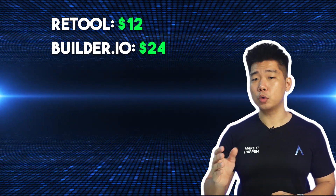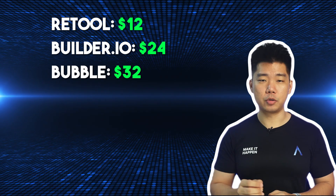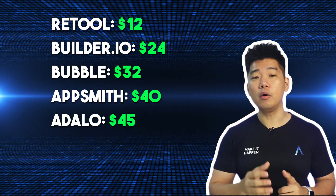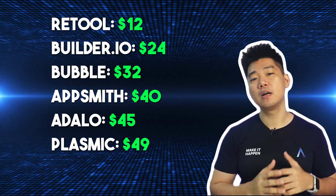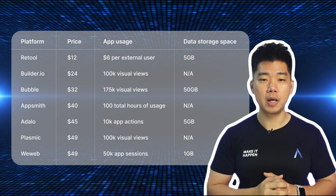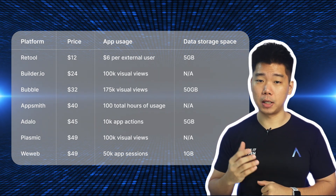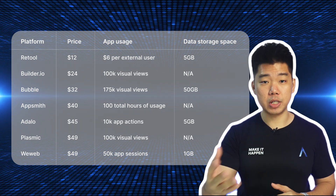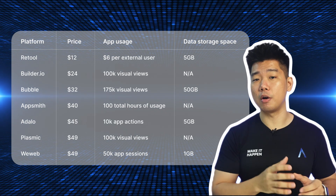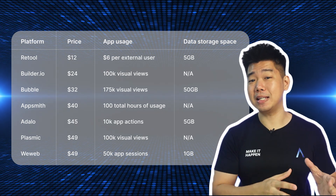If we arrange the rest from cheapest to most expensive basic monthly plans, we get: Retool $12, Builder.io $24, Bubble $32, AppSmith $40, Adalo $45, Plasmic $49, WeWeb $49. If we could compare them apples to apples, it would be easy — go with Retool. But if we consider storage space and customer app usage, it's now impossible to objectively say which is the best plan, because depending on your app usage and storage needs, you could be comfortably within one starter plan's limits and exceed another in a couple of days.